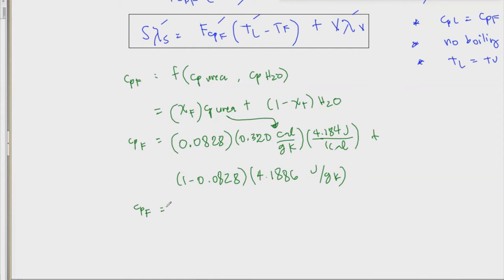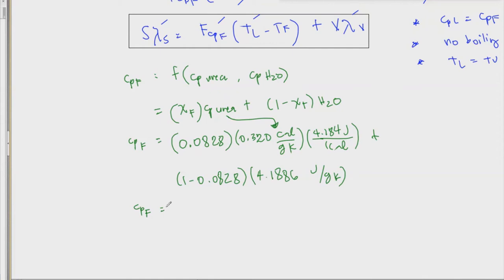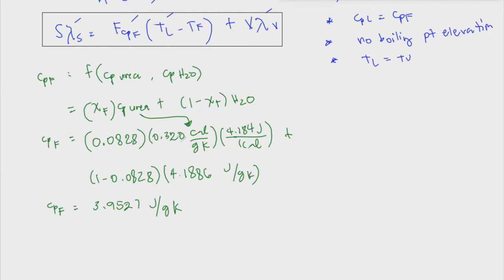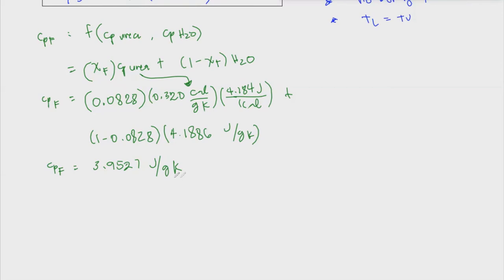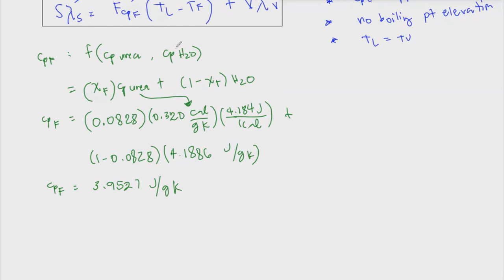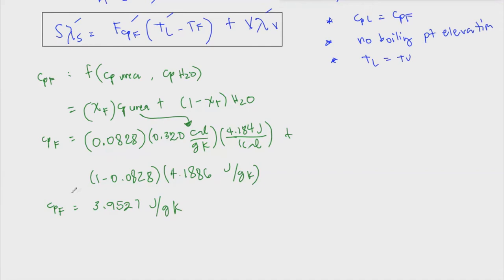For water at 293.15 K, from thermodynamic properties Table 2-413, the specific heat capacity is 4.1818 joules per gram kelvin. Therefore, the specific heat capacity of the feed Cp_F equals 3.9527 joules per gram kelvin.